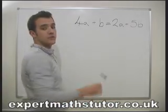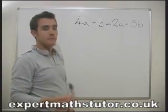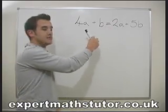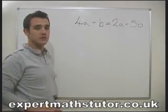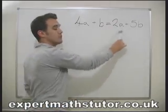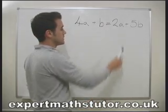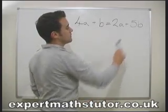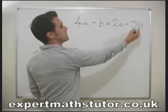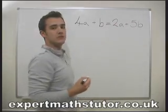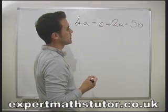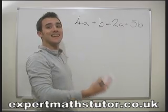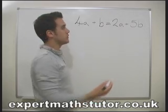So how are we going to do that? Let's try and get the a's onto the left-hand side, so we need to get rid of all the a's from the right-hand side. How do we make there be 0a on this side of the equals sign? Well, we've got 2a's, so we need to take 2a's away.